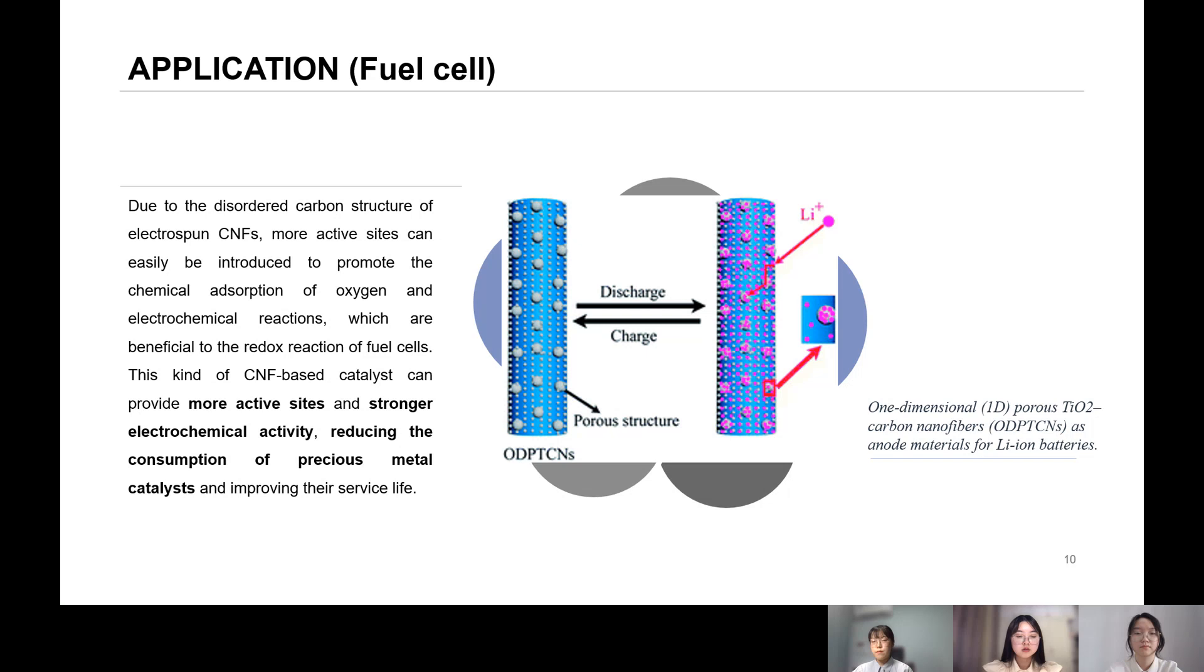Due to the disordered carbon structure of electron spawn, CNF can provide more active sites and stronger electrochemical activity, reducing the consumption of precious metal catalysts and improving their service life.